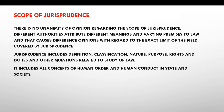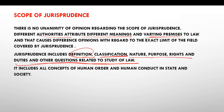Scope of jurisprudence: there is no unanimity of opinion regarding the scope of jurisprudence. Every author and authority feels jurisprudence has a different meaning with varying premises, so its scope cannot be defined particularly. But jurisprudence includes definitions, classifications, nature, purpose, rights and duties, and answers to law-related questions. It includes concepts of human order and human conduct in state and society — the study of rules and principles governing conduct.